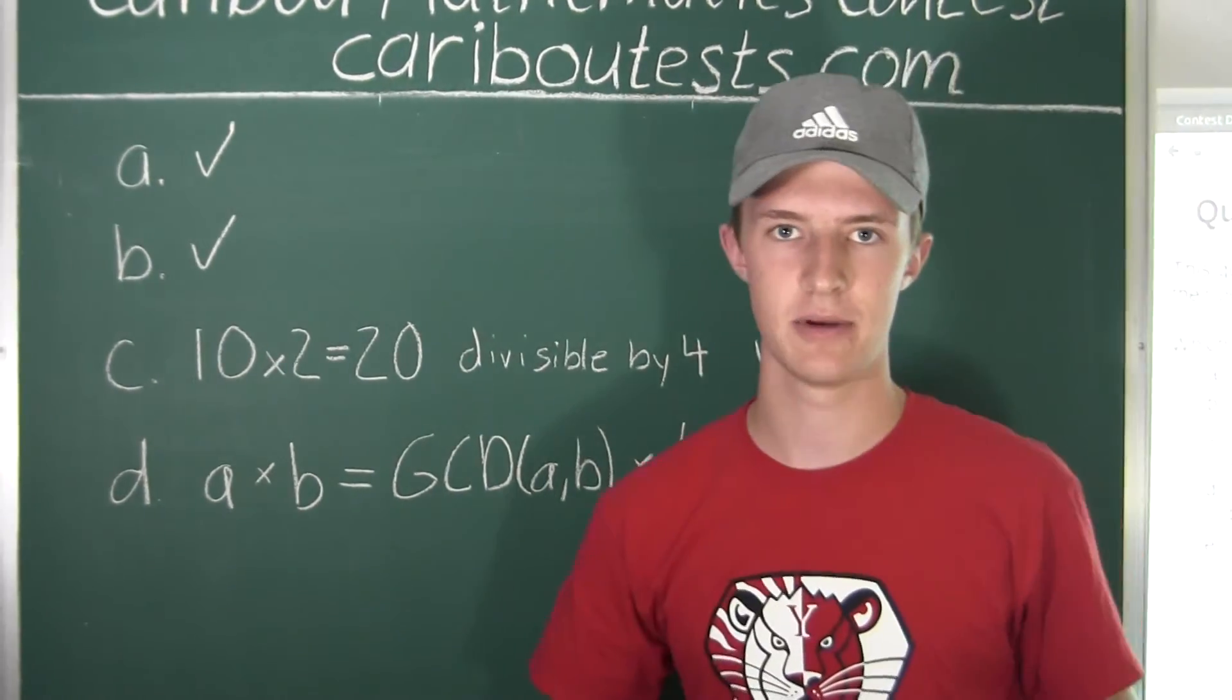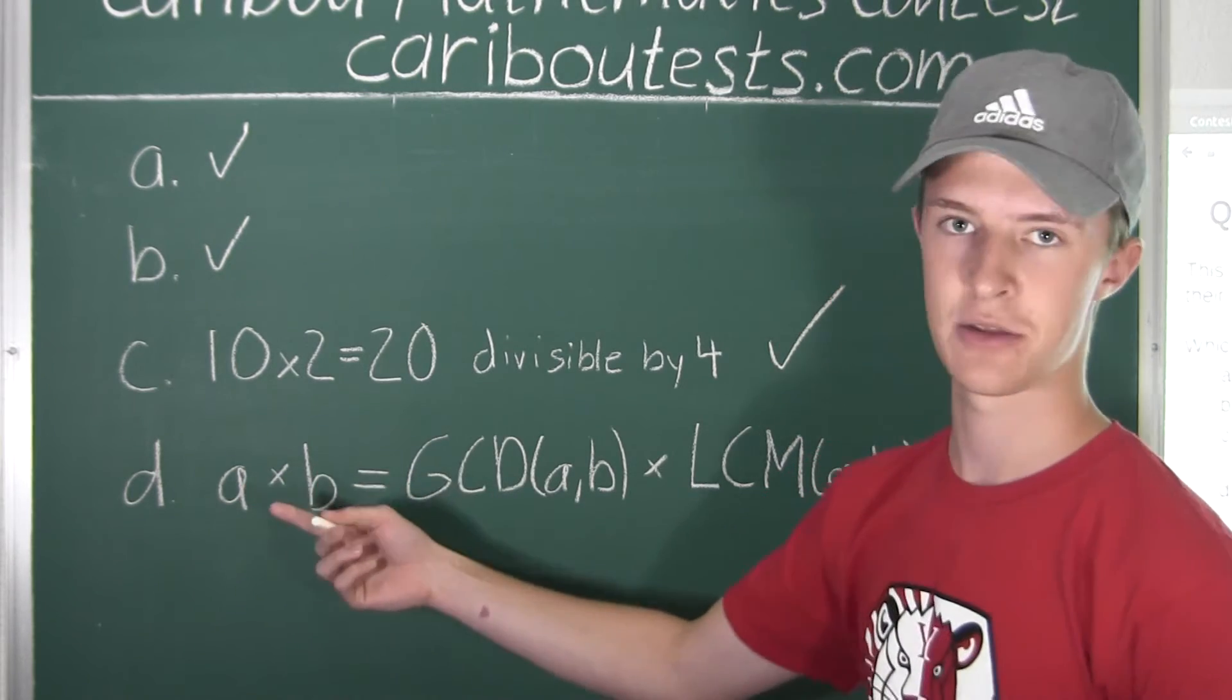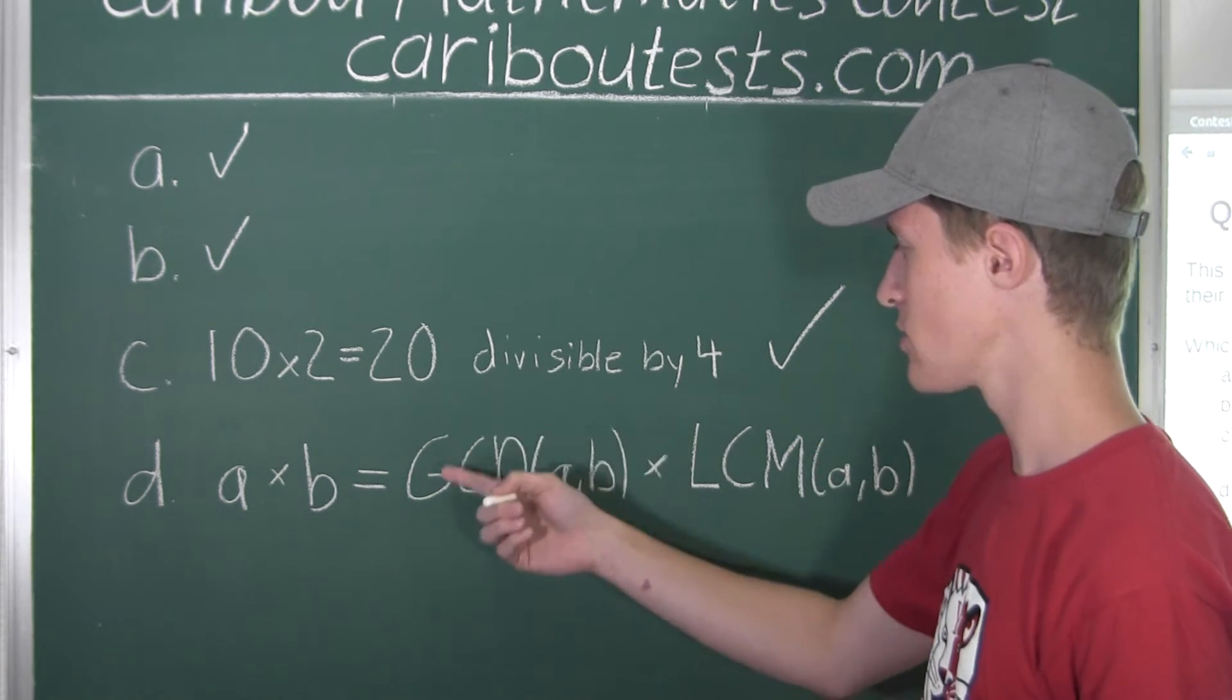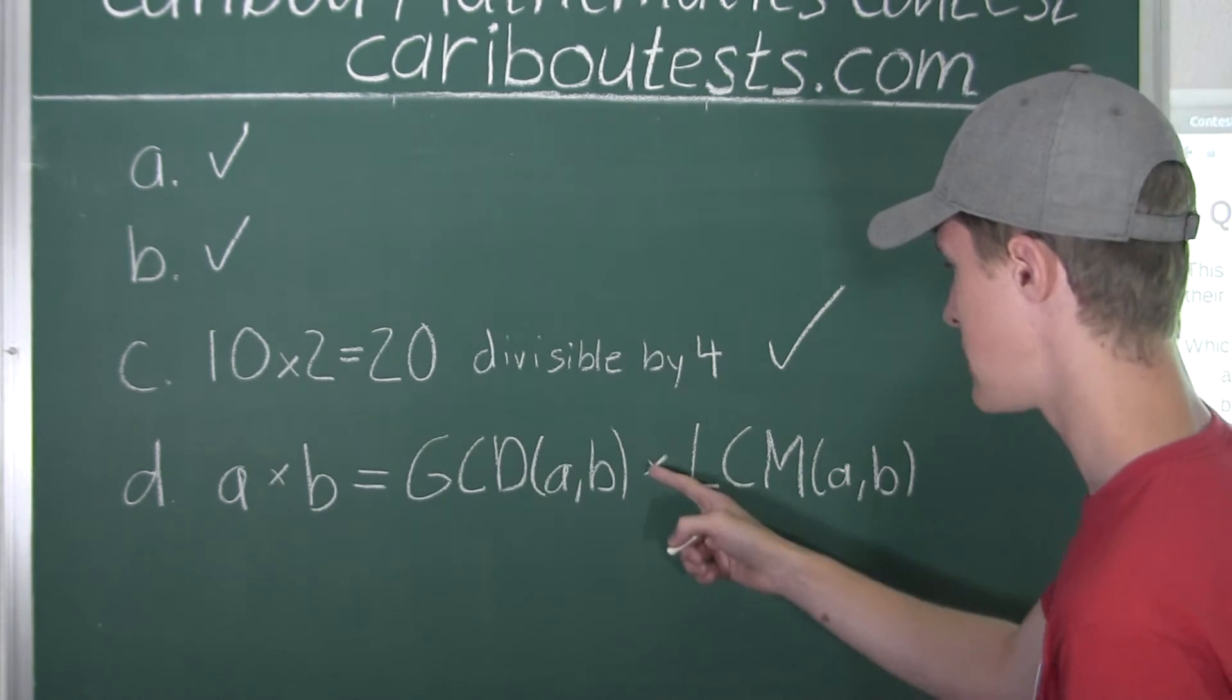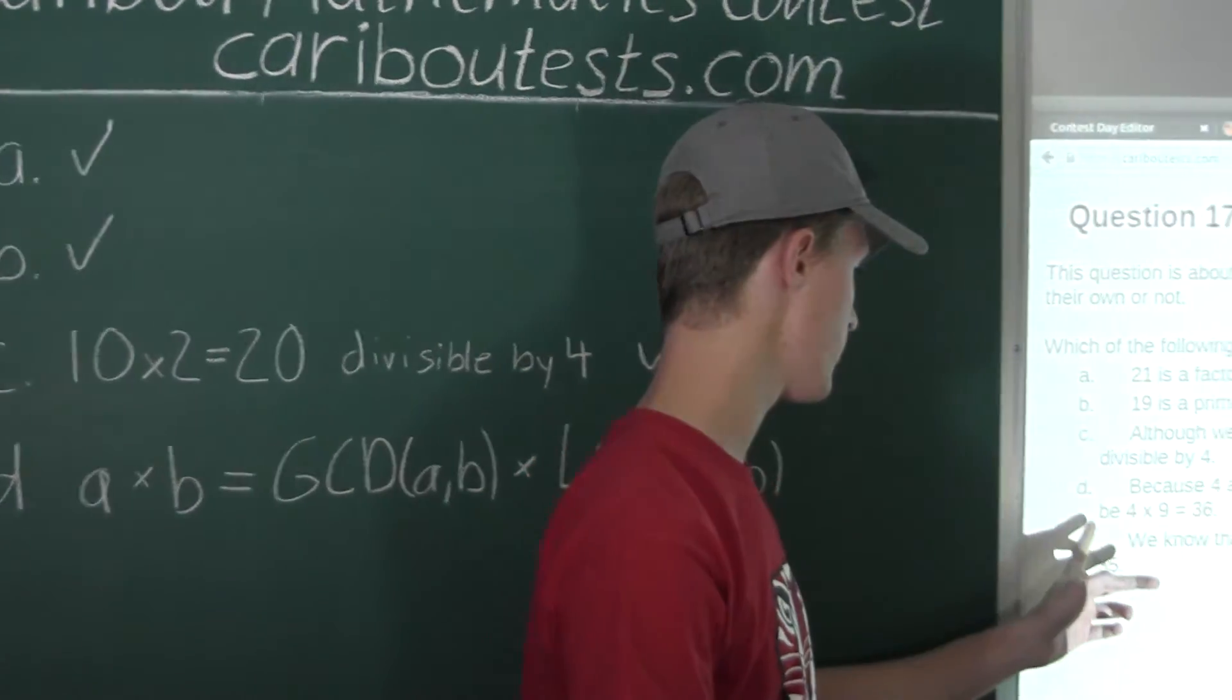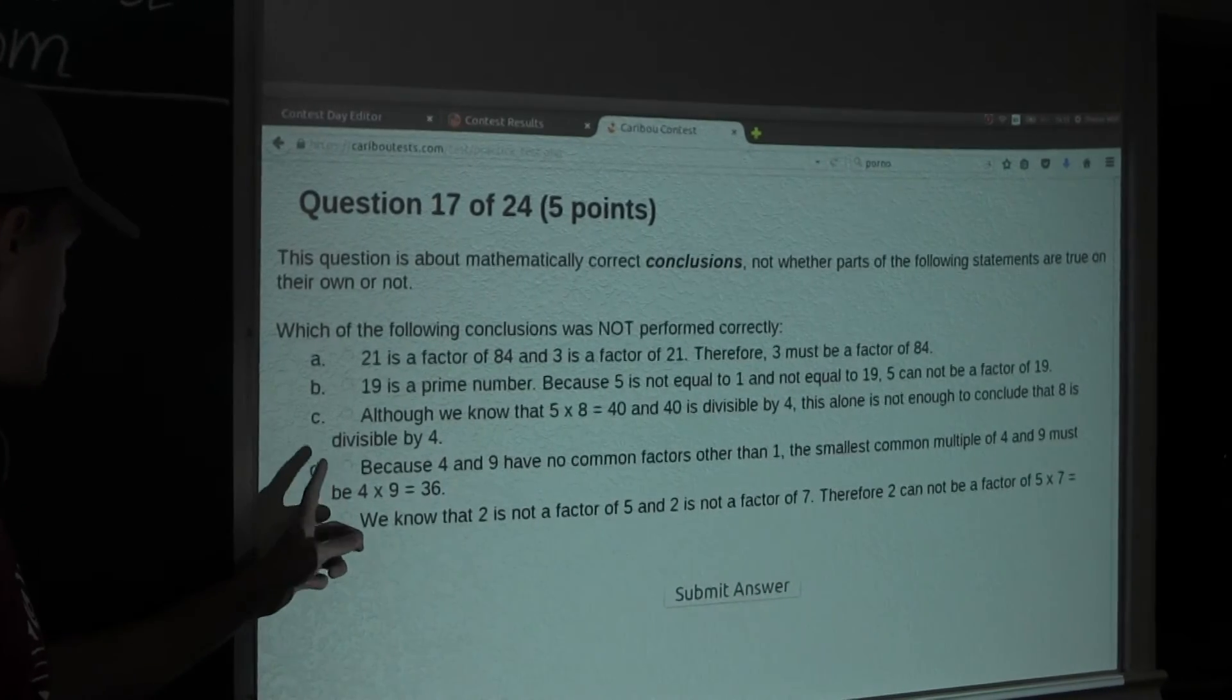Alright, so now I will just sub in the numbers, 9 and 4. So, we have 4 times 9, which is 36, equals to, and we know from the question that they have no common factors other than 1, so their greatest common divisor is 1. So, it's 36 is equal to 1 times their LCM, lowest common multiple, which must also be 36, and again, we know from the question it says 36. So, we know that option D is true.